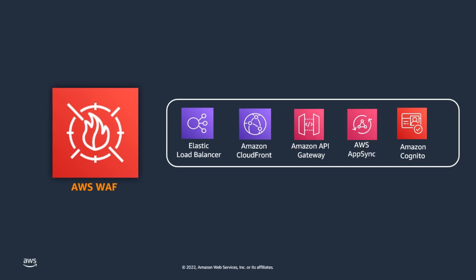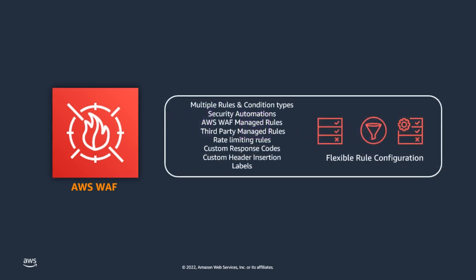AWS WAF also integrates with Amazon Cognito, making it even easier to protect Cognito user pools and hosted UI from common web exploits. AWS WAF gives you control over which traffic to allow or block to your web applications by defining customizable web security rules.